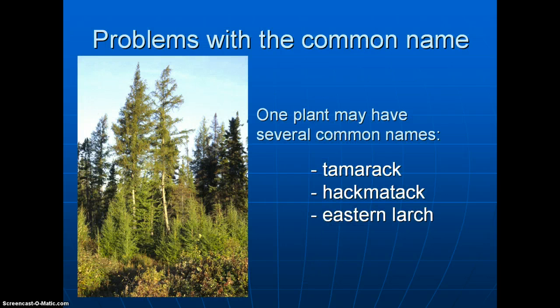One problem is that one plant may have several different common names depending on where you are located. Some species have a wide distribution — a wide range — such as from one end of the country to the other, such as a country as big as Canada, or even different continents.